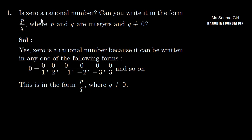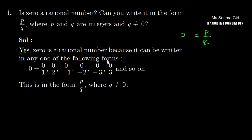Question number 1: Is 0 a rational number? Can you write it in the form of P upon Q, where P and Q are integers and Q is not equal to 0? So we need to prove that 0 can be written in P upon Q form. Yes, 0 is a rational number because it can be written in the following forms.